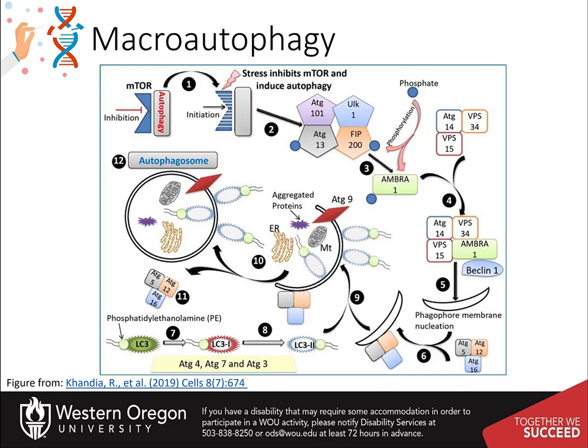The formation of an autophagosome is an involved process. Step 1: Autophagy is normally inhibited by the mTOR protein, or mammalian target of rapamycin. mTOR is a protein kinase that regulates cellular response to growth factors, nutrient levels, and stress levels. It's part of the PI3K-AKT pathway that we learned about during our insulin signaling cascade. Thus, during times of plenty, mTOR activity keeps the autophagy pathway silent.